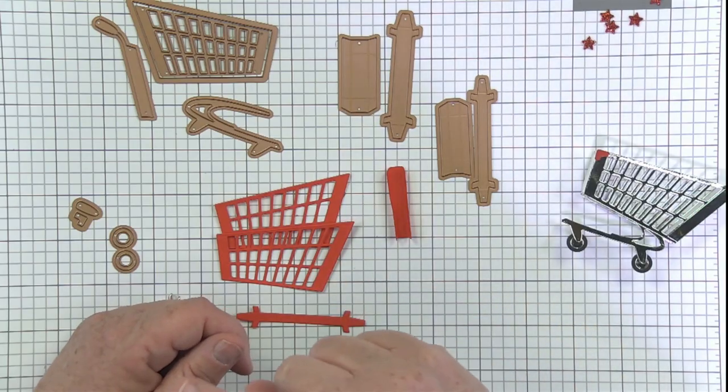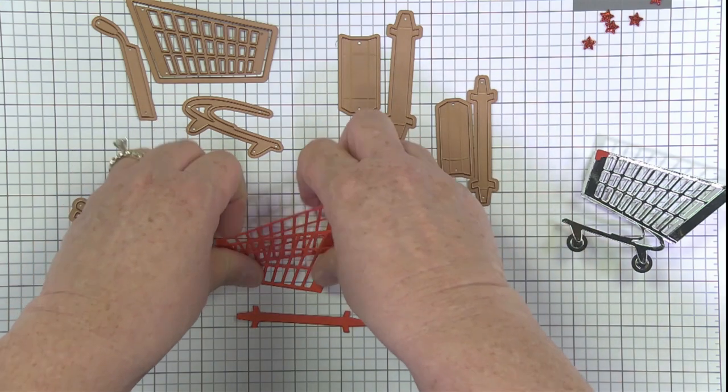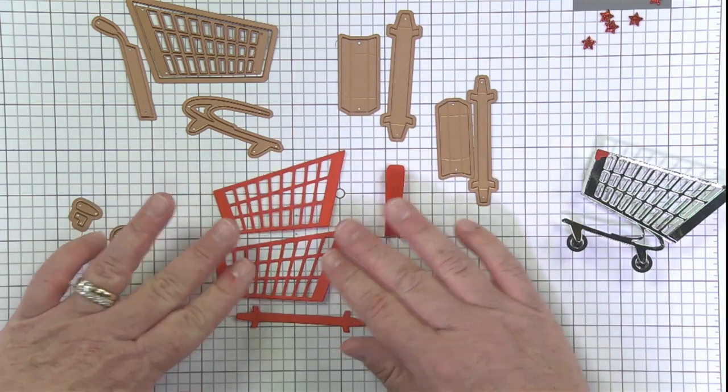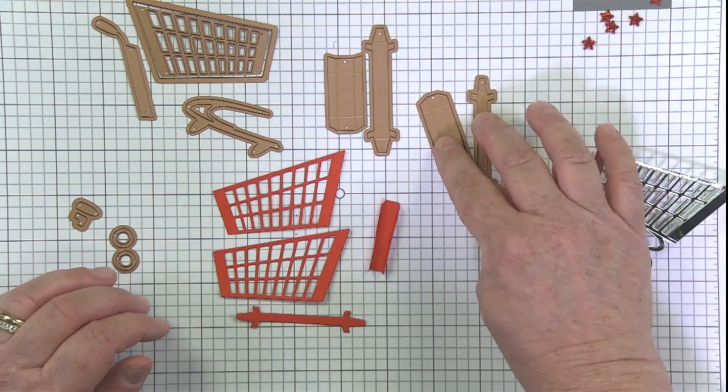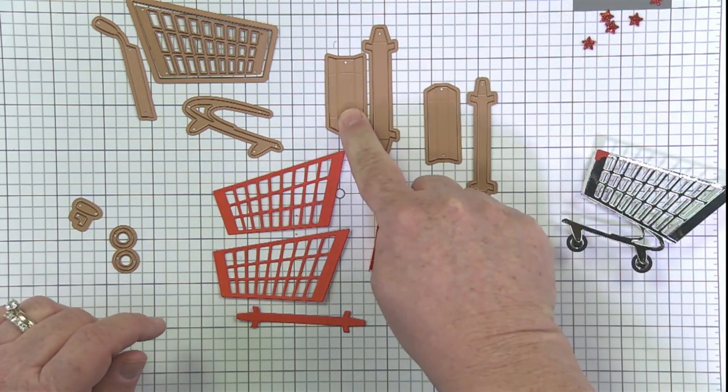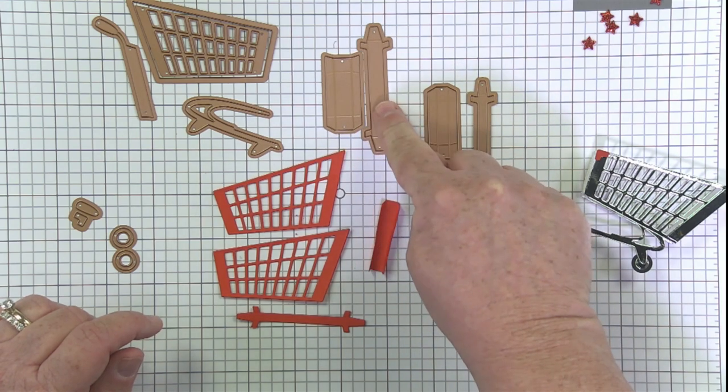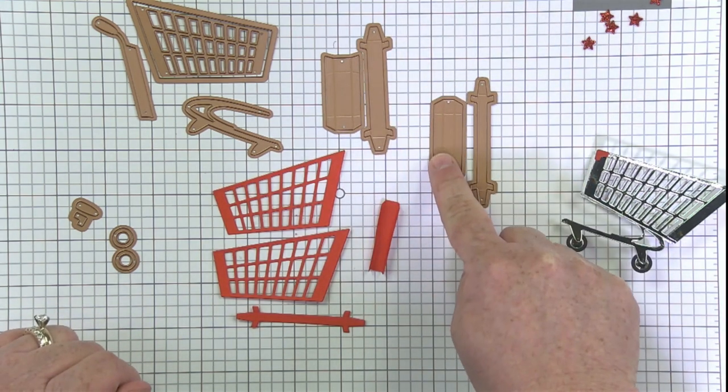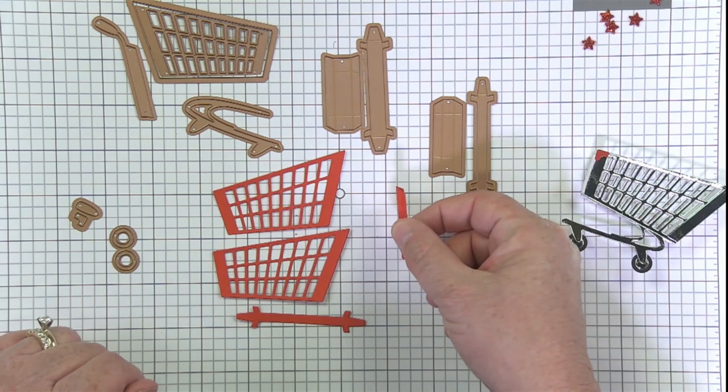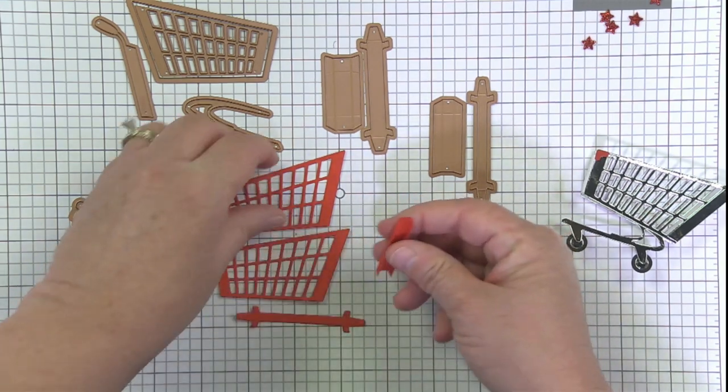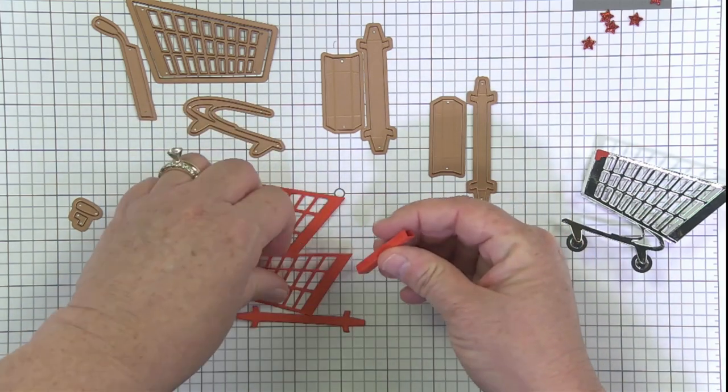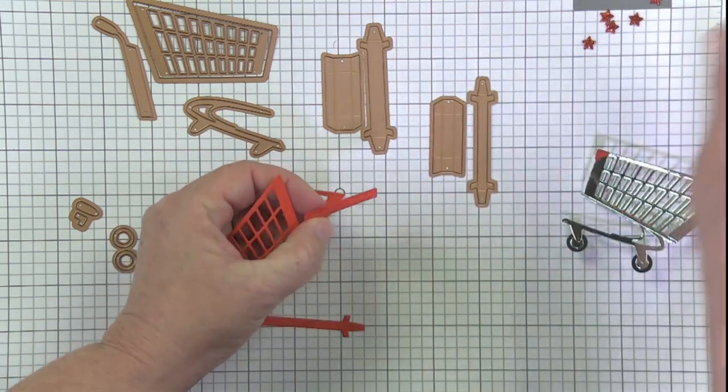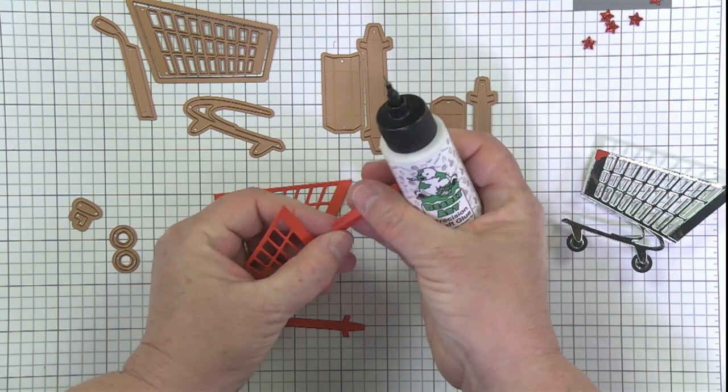First things first, some die cutting. You want to go ahead and cut out two sides of your shopping cart so it can hold all the things. You've got two depths of shopping cart. You've got your thicker side that matches the thicker bottom and then your slimmer side and your slimmer bottom. I chose to do the slimmer side right here. I've already pre-scored it so I folded it a little bit.